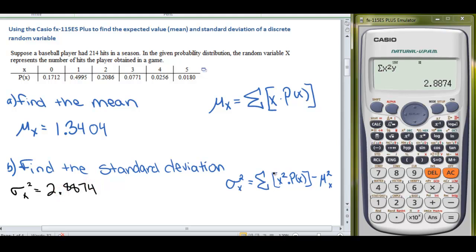We've got 2.8874, which is the first part of the formula, the sum of x squared times p of x. We have to subtract mu squared, our mean squared, or our expected value squared. So minus 1.3404 squared. The 2.8874 minus 1.3404 squared equals 1.547. So our variance of our discrete random variable is 1.547.